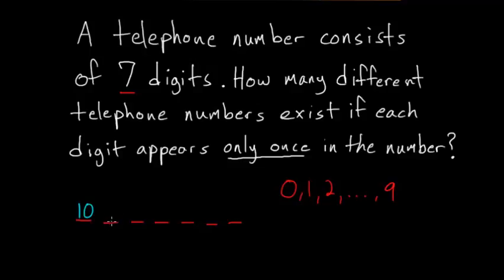but in the next slot we only have nine possible choices because we can't use one of the digits we used here. So there'll be nine there, and following this logic there will be eight here, seven here, six here, five here, and four here.